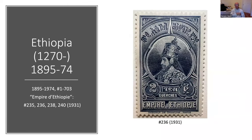Ethiopia was fairly early — 1270 — when a central Ethiopian kingdom conquered the others and declared a sovereign empire. There are four stamps that are the only ones saying 'Empire of Ethiopia' in French. The other inscriptions are in Amharic. Certainly, here is a clear claim that they were an empire.